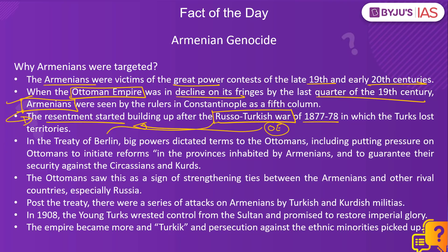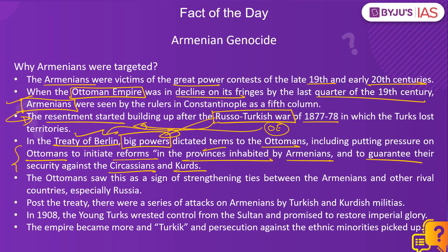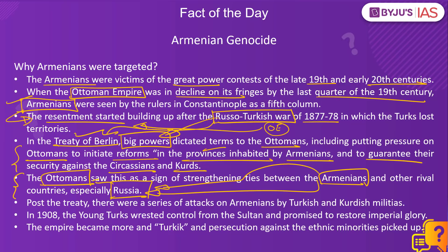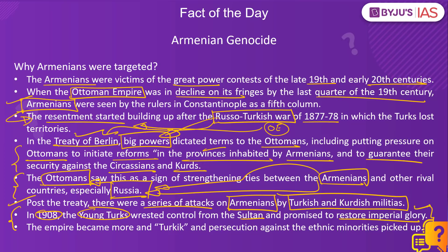Following the Ottoman defeat, the Treaty of Berlin was signed where big powers led by Russia dictated terms to the Ottomans, bringing pressure on them to initiate reforms to guarantee the security of the Armenian minority against the Circassians and Kurds. The Ottomans saw this as a tie-up between the Armenian minority and their primary rival Russia, perceiving the Armenians as assisting Russia in weakening the Ottoman Empire. A series of state-sponsored attacks followed. Then in 1908, a Turkish nationalist movement rose and the Young Turks captured power from the Sultan, turning Turkey into an inward-looking, majority-Turkish-dominated country that targeted all ethnic minorities including the Armenians.